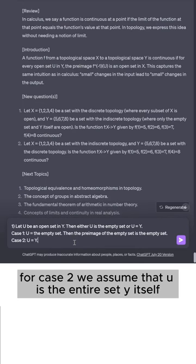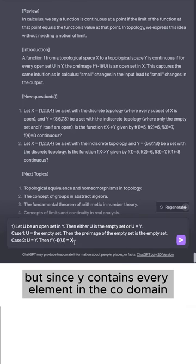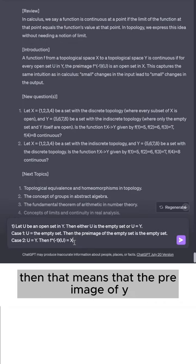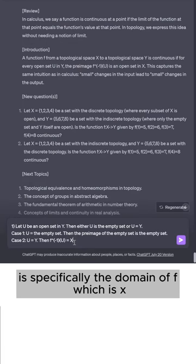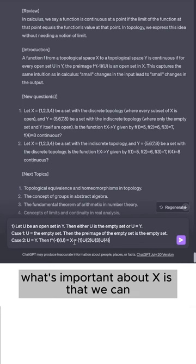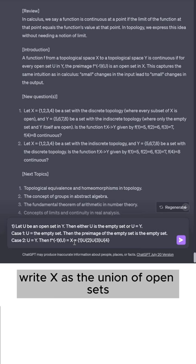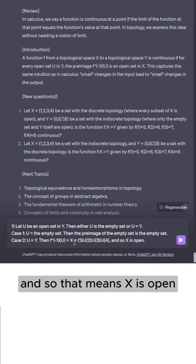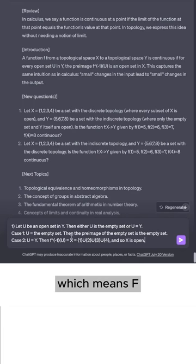For case 2, we assume that u is the entire set y itself. But since y contains every element in the co-domain, then that means that the pre-image of y is specifically the domain of f, which is x. What's important about x is that we can write x as the union of open sets. And so that means x is open, which means f inverse of u is open.